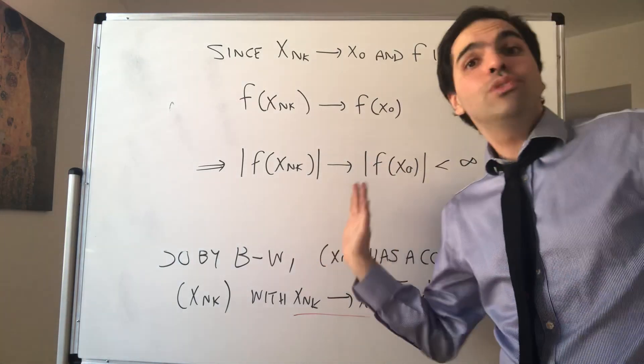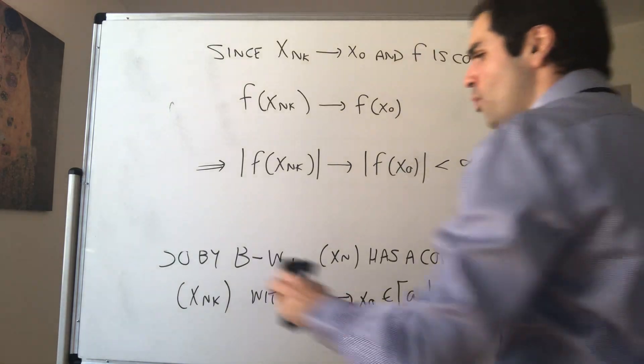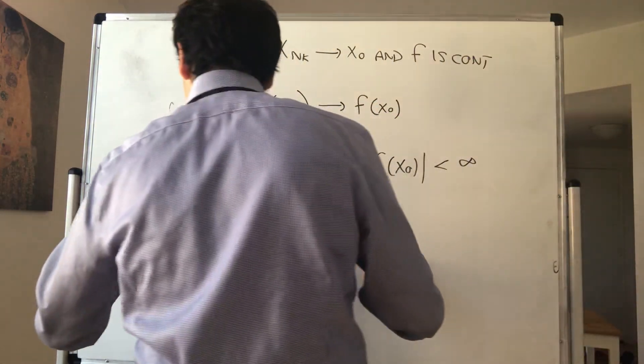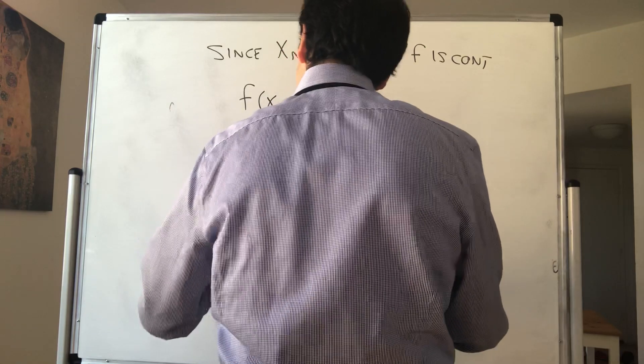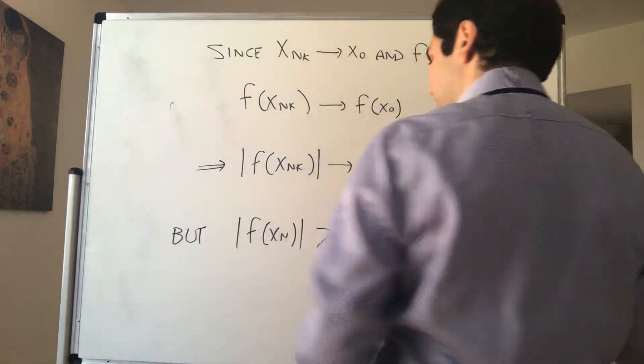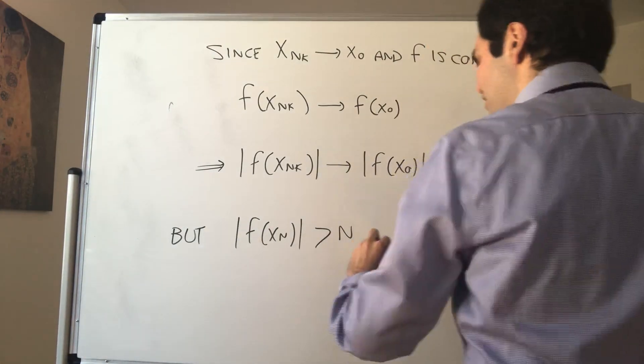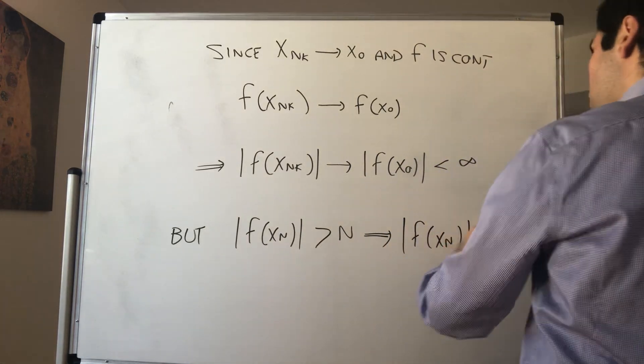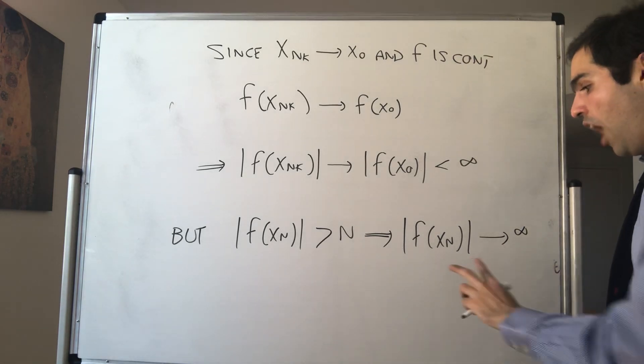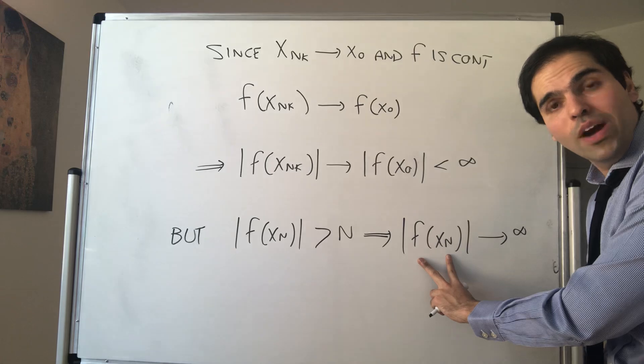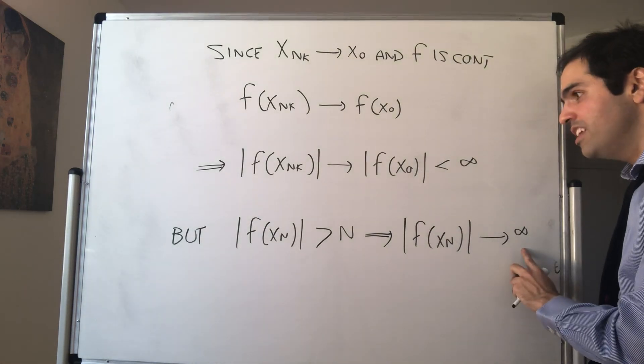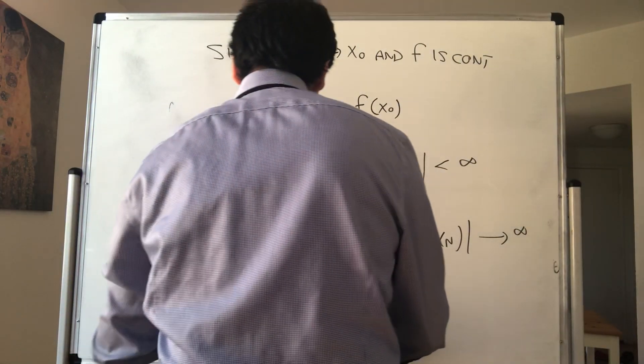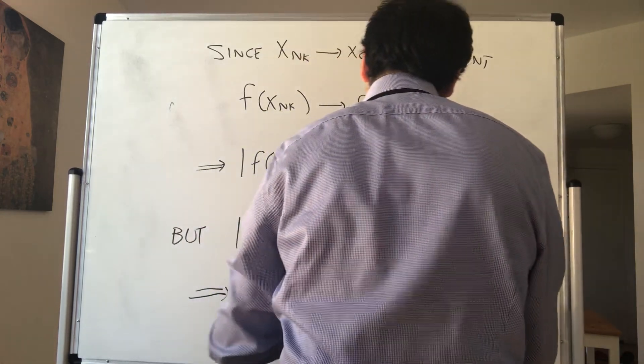On the other hand, we never used the definition of xₙ. Well, remember, the way we defined xₙ is that it's a counterexample to boundedness. We know that |f(xₙ)|, by definition, is bigger than N. So the sequence f(xₙ), just by comparison, must go to infinity as N goes to infinity. However, since this is true for the sequence, the subsequence must also go to infinity. So therefore, f(xₙₖ) must go to infinity as well.